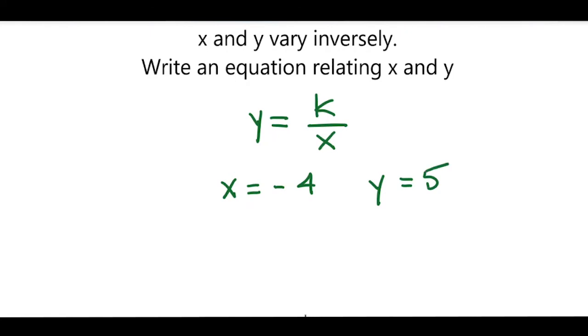Here I have an x value of negative 4 and a y value of 5. So I will plug them into the inverse variation model to solve for k. Well, y equals 5, so we'll write this as 5 equals k over negative 4.